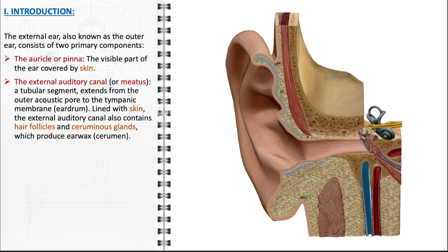The external auditory canal, or meatus, is a tube-like structure that extends from the outer acoustic pore — the opening of the ear — to the tympanic membrane, commonly known as the eardrum. The external auditory canal is lined with skin and has several important features. It contains hair follicles that help to prevent foreign objects from entering the ear. Additionally, it houses ceruminous glands, which are responsible for the production of earwax, or cerumen. This earwax plays a protective role, trapping dust and other small particles and preventing them from reaching the sensitive eardrum. Moreover, earwax has antibacterial properties, which helps to keep the ear canal healthy.